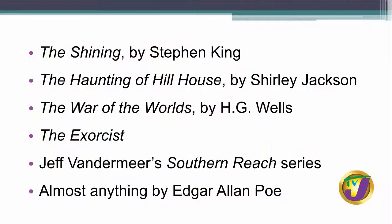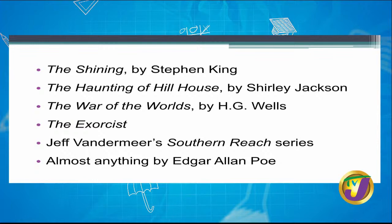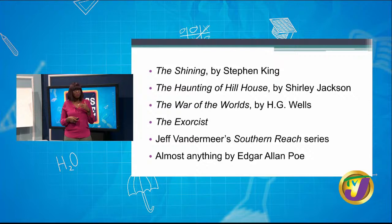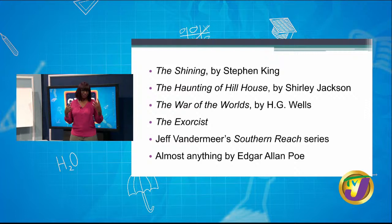Examples of man versus the supernatural: The Shining by Stephen King has various supernatural elements; The Haunting of Hill House features a malignant spirit in the house the characters must overcome; War of the Worlds involves an alien invasion; The Exorcist features a girl possessed by an otherworldly being; and almost anything by Edgar Allan Poe references a ghost or some kind of otherworldly creature. With this type of conflict, you're able to create more — it lends itself to more creativity because you have to create this other world and set the rules how you want them.